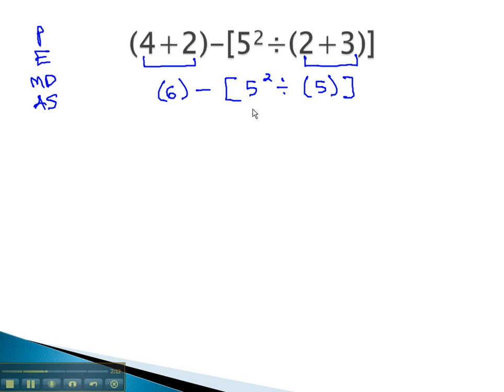We still have another parentheses to work with, and inside the parentheses order of operations tell us to do exponents before we divide. So we'll do the exponent five squared first, giving us six minus five squared is twenty-five, divided by five.